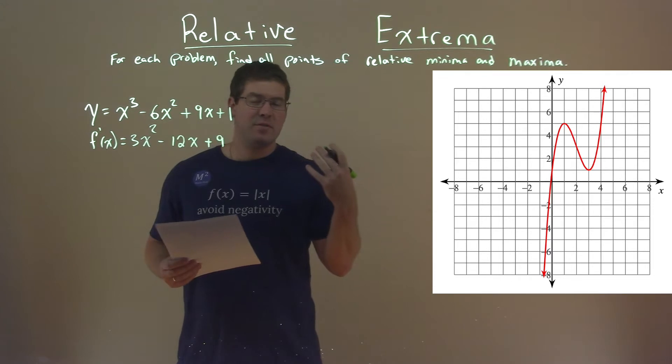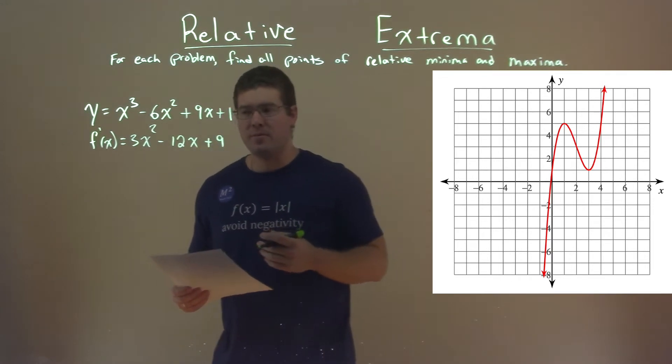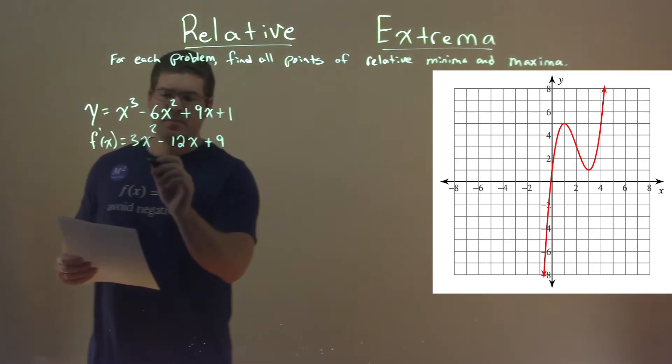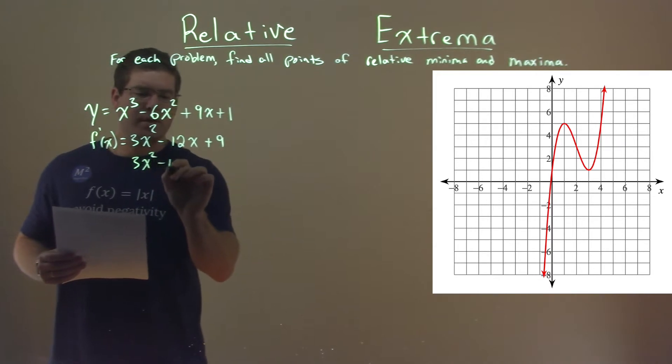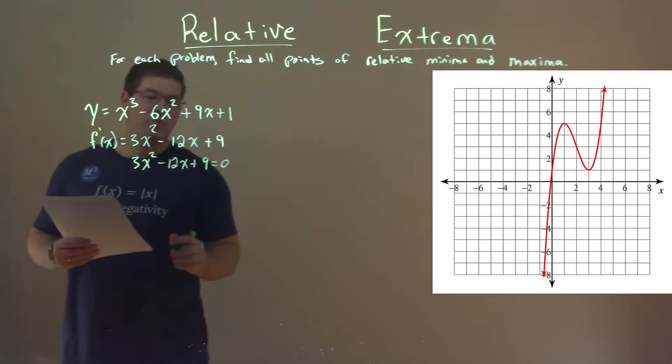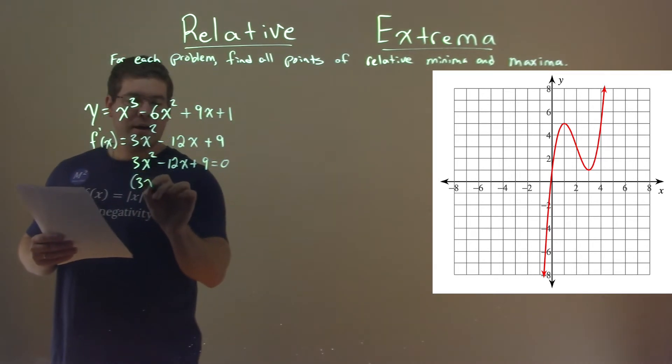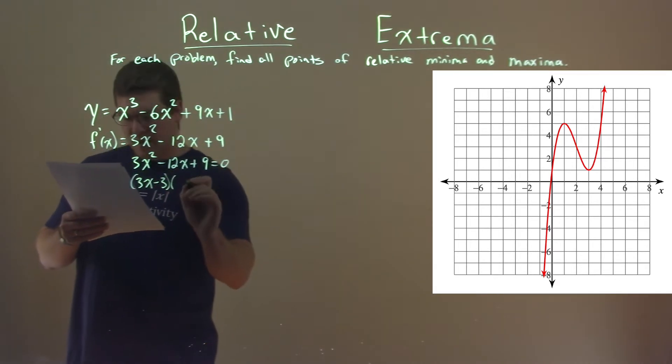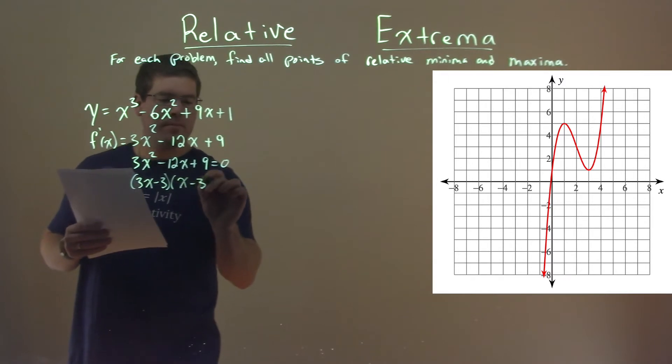From here, we want to take the first derivative test, and so we're going to find the critical points. We're going to set this equal to 0. 3x squared minus 12x plus 9 equals 0, and this factors out to be 3x minus 3 times x minus 3 equals 0.